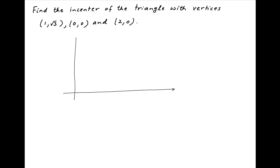Let's begin by plotting the three vertices of this triangle on the Cartesian plane. One vertex is at the origin, the second vertex is at one point, and the third vertex is at another point. We'll denote the three vertices of this triangle as A, B, and C respectively.